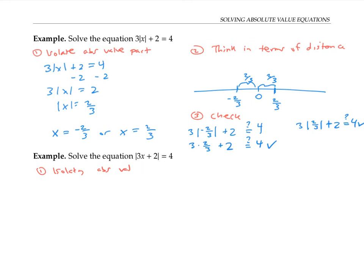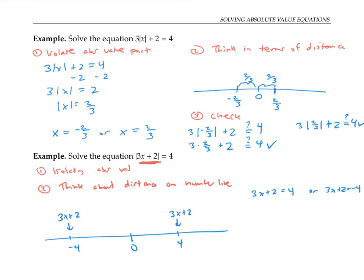So I'll just go ahead and jump to thinking about distance on the number line. On my number line, the whole expression 3x + 2 is supposed to be at a distance of four from zero. So that means that 3x + 2 is here at four, or 3x + 2 is at negative four. I'll write those as equations. Three x plus two equals four, or three x plus two is minus four, and then I can solve.